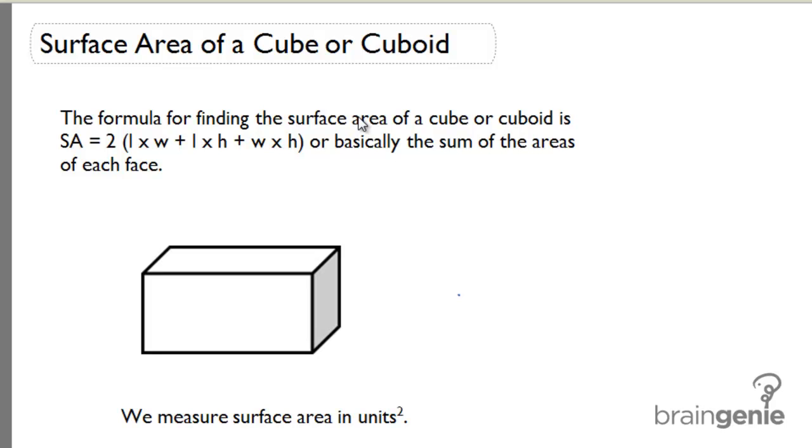In order to find the surface area of a cube or cuboid, we're going to use a very different process than we use for volume. Volume is how much space an object or solid takes up. Surface area is very different. Surface area is just how much area is on each of the surfaces of the cube or cuboid.